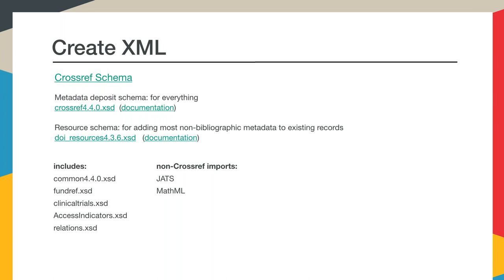Our most recent schema version is 4.4.0, but we do accept deposits with 4.3.0 through to 4.4.0. We've got a metadata schema that can be used to deposit everything, and then we also have what's called a resource schema, which can be used to update or add select pieces of metadata for your registered content. For example, if you wanted to add funding or license information to your existing Crossref deposits, we don't ask you to redeposit the full XML. We can take a list of that information as a CSV file and add it to your existing metadata.